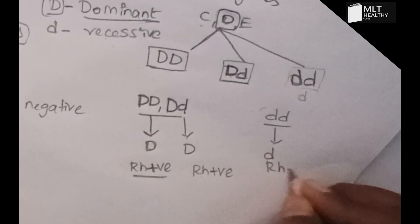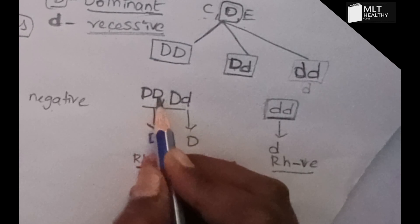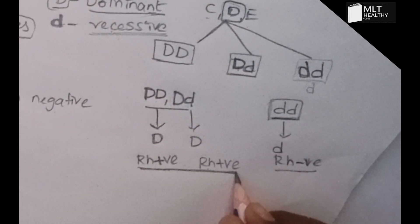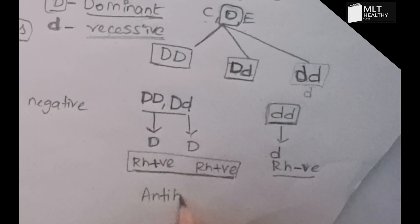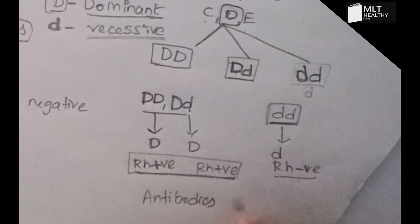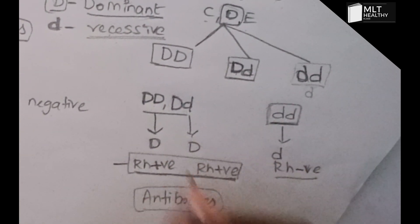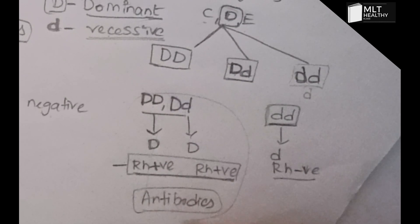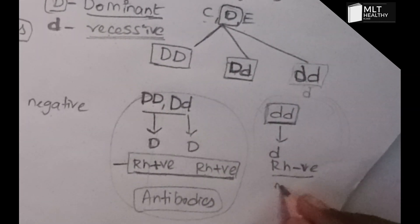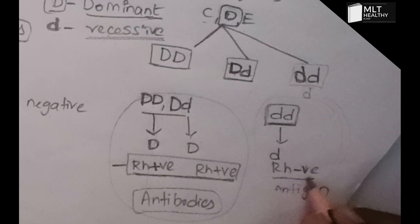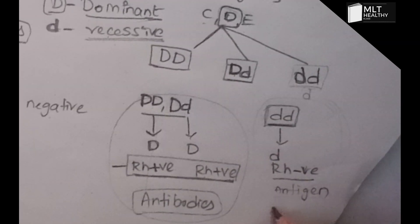This dd genotype results in the Rh negative group. In the Rh positive group, the Rh antigen is produced by the dominant D genes. In Rh negative individuals, no Rh antigen is produced, and correspondingly no antibodies are pre-formed either.